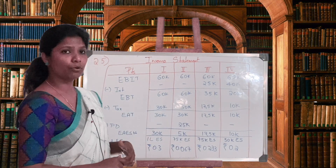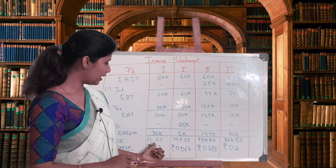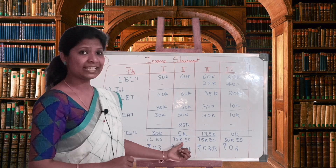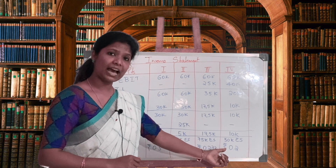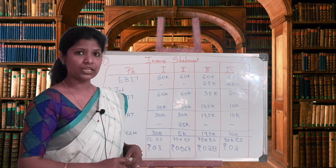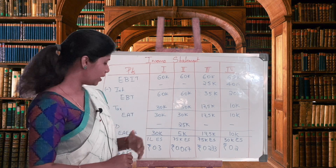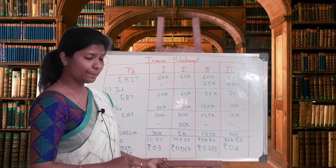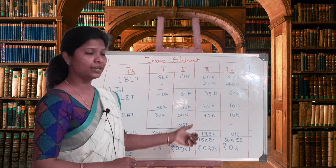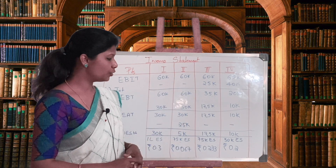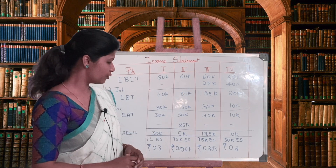Earnings available to equity shareholders are: 30,000 for plan one, 5,000 for plan two, 17,500 for plan three, and 10,000 for plan four. Number of equity shares from working note two: 1 lakh, 75,000, 75,000, and 50,000. So EPS: plan one is 0.30, plan two is 0.067, plan three is 0.233, and plan four is 0.20.